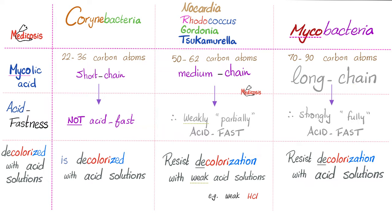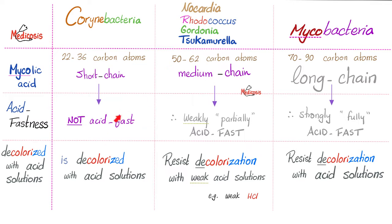Mycobacteria have long-chain mycolic acid — 70 to 90 carbons — that's why they are strongly acid-fast, resisting decolorization with acid solutions. Versus Nocardia, Rhodococcus, Gordonia, and Tsukamurella — they have medium-chain mycolic acid and are therefore partially acid-fast, meaning they resist decolorization with weak acid solutions only. Strong ones will decolorize them. Corynebacteria have short-chain mycolic acid — not acid-fast at all.